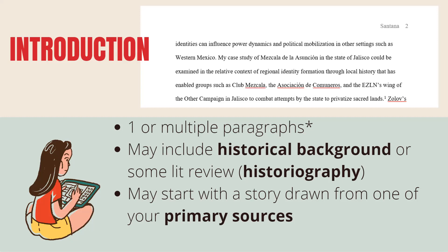Other things you might want to consider including in your introduction paragraphs: you can incorporate some historical background or historical context of the subject you're addressing. Another way you can potentially start your introduction section is to open with a story directly from one of your primary or secondary sources. For example, for a master's paper I wrote, I was writing a paper on an immigrants rights organization in Los Angeles called the Los Angeles Committee for the Protection of the Foreign-Born.